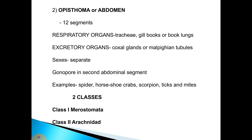The first segment lacks appendages. The opisthosoma or abdomen contains 12 segments; respiratory organs are tracheae, gill books, or book lungs. Excretory organs are coxal glands or Malpighian tubules. Sexes are separate, with the gonopore on the second abdominal segment. Examples include spider, horseshoe crab, scorpion, ticks, and mites, belonging to two classes: class Merostomata and class Arachnida.